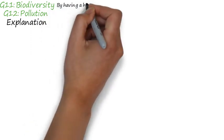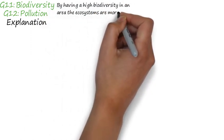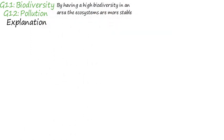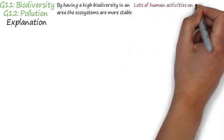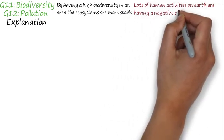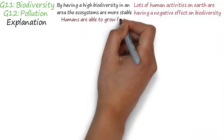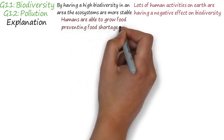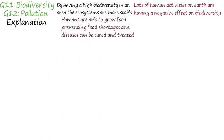Biodiversity is key, as we've already discussed. By having a high biodiversity in an area, the ecosystems in that particular area are going to be more stable. However, lots of human activities on earth are having a negative effect on biodiversity.